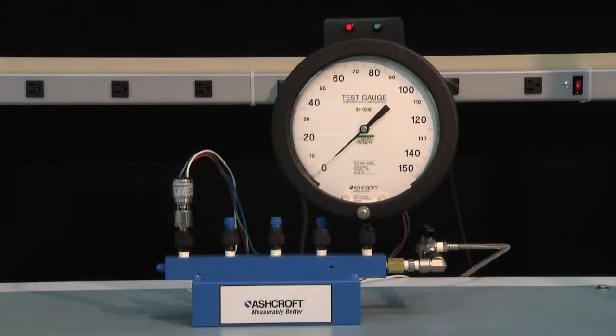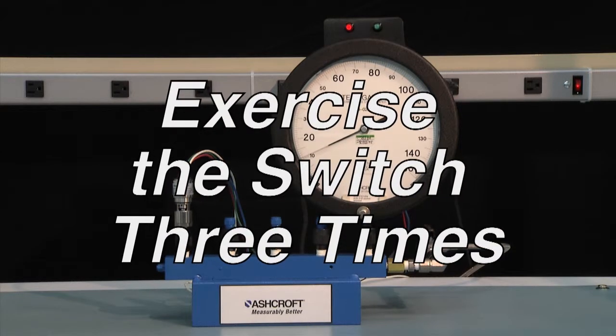The first step of calibration is to exercise the switch to make sure it is operating correctly. To exercise a switch start from 0 psi and increase to full range of the switch. In this case 100 psi and then return back to 0. This should be done three times.